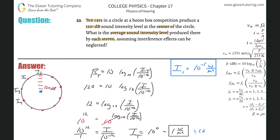But the question asks for the average sound intensity level — and that extra word "level" means they want it in decibels. If it just said average sound intensity or average intensity, we'd be done. But as soon as they use the word level, that means they want it in decibels. So we have to do our conversion.